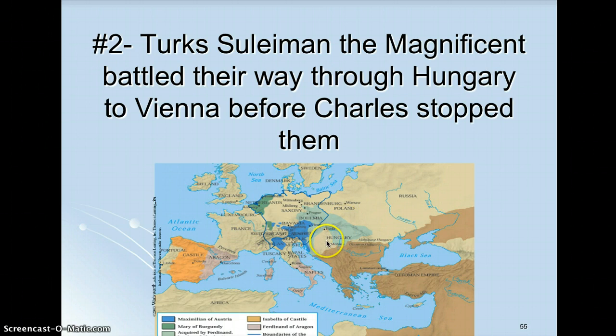Luther was really the least of his concerns during the 1520s. Remember, Charles is in his early 20s — he's not very old — and he's dealing with attacks from both the east and the west.